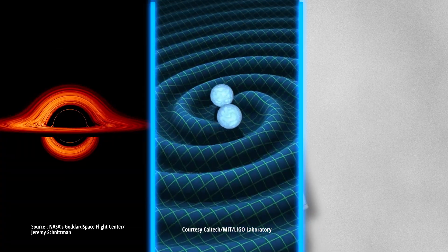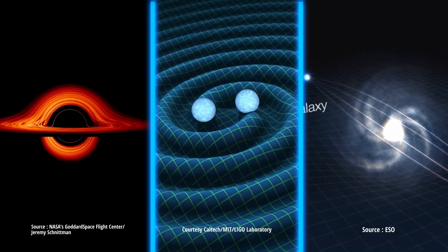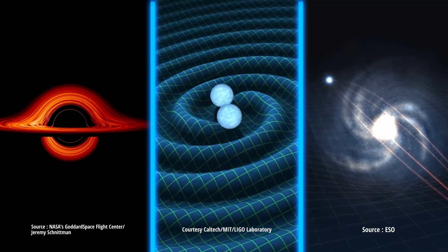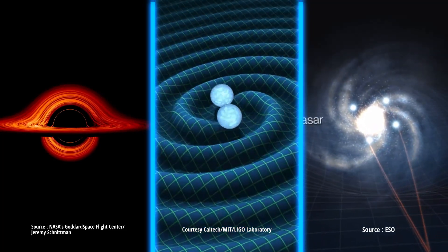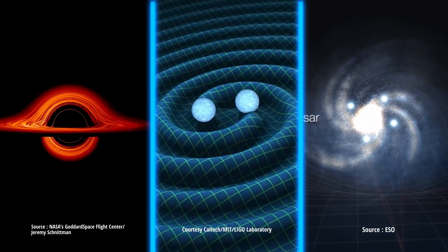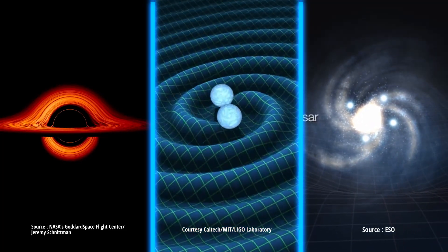General relativity has since been verified many times — there's no questioning that. Black holes, gravitational waves, gravitational lensing — all of these things have been predicted by general relativity and since been verified to be correct.